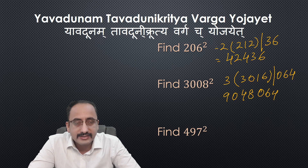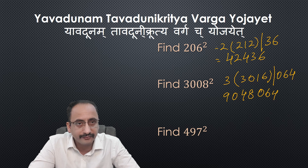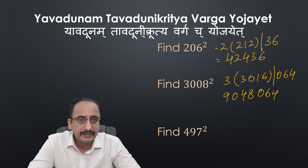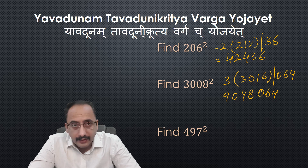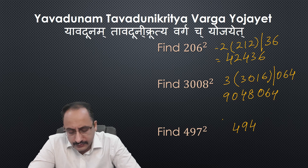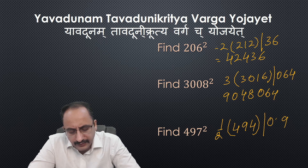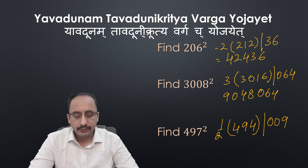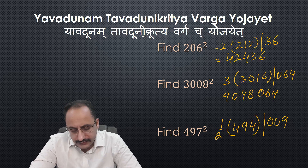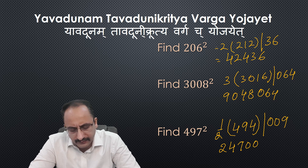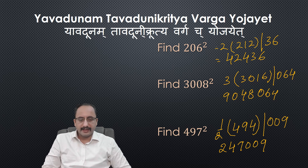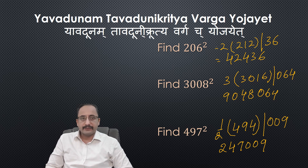Last hard example: square of 497. I take base as 1000 and sub base as half. Deficit is minus 3 since 497 is 500 minus 3. Number plus deficit is 494. Multiply by half: 494 divided by 2 is 247. Square of 3 is 9, and since 1000 has three zeros we write 3 digits: 009. So the square of 497 is 247,009.